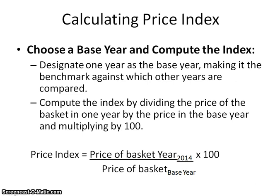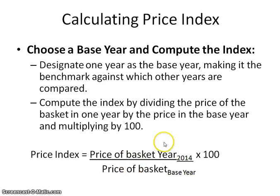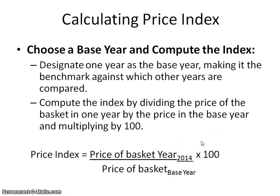When we're figuring out the price index, this formula here is really important. You're looking at the price of the basket of the year you're currently in and how that compares to the base year — you divide those two and multiply by 100. If we're talking about the base year, your price index will always be 100, because the price of the basket of the base year divided by itself is 1, times 100 is 100. Any type of inflation will have a CPI greater than 100.